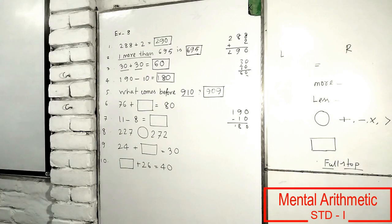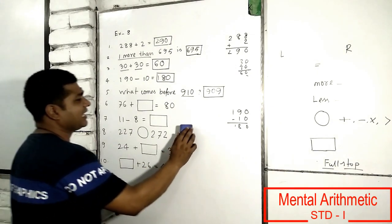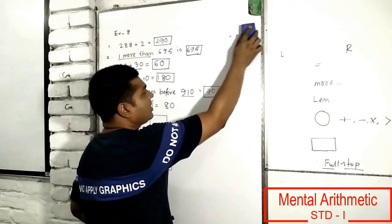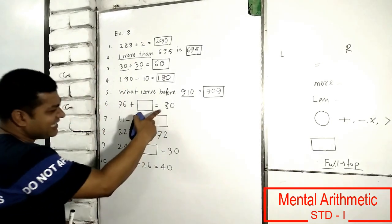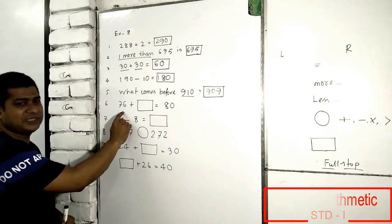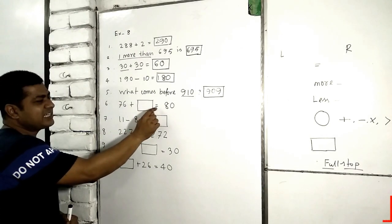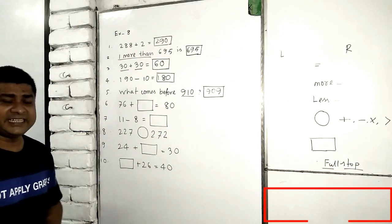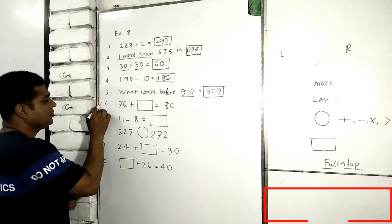With 76, what I have to add to get answer 8? That means I have to add something with this 76 so that the answer will be 8. I will do it later.